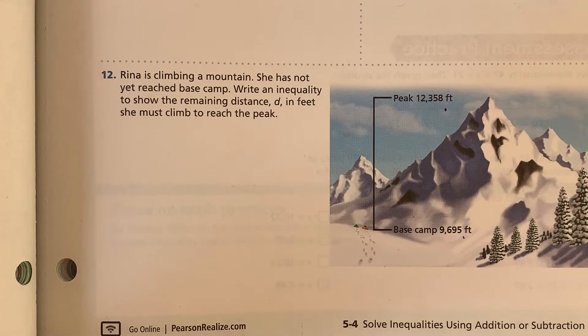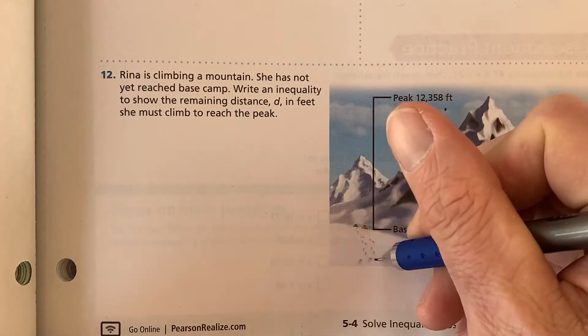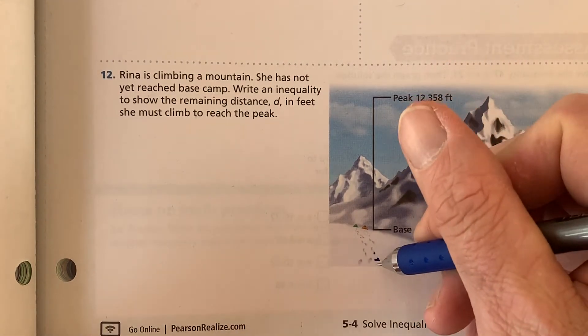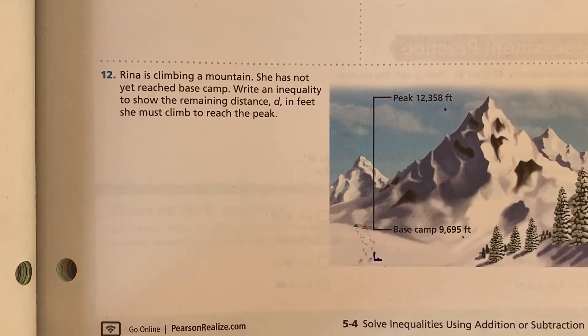So we realize that she hasn't yet reached the base camp. Maybe Rina is down here or something like that. We're not really sure, right? We don't really know where she is. That's one reason using inequalities helps us, because it gives us lots of prospective answers and makes it so we don't have to find out the specific exact number.